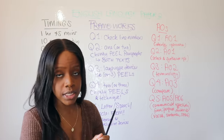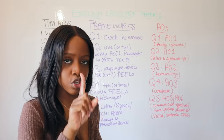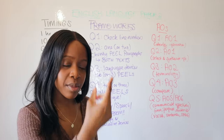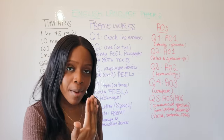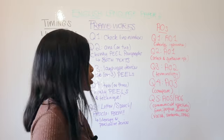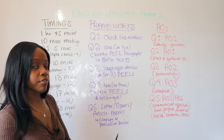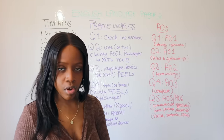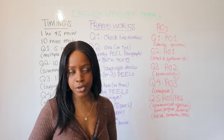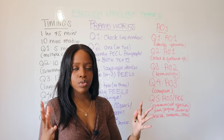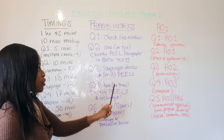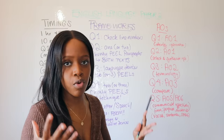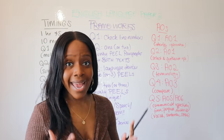For Question Three, the language question focusing on just one source, make sure you identify the language devices being illustrated — similes, oxymorons, metaphors, and so on. Aim to write at least two PEEL paragraphs, if not three, discussing those language devices. A separate video will cover Question Three in more detail, so don't worry if you can't recall every technique right now.